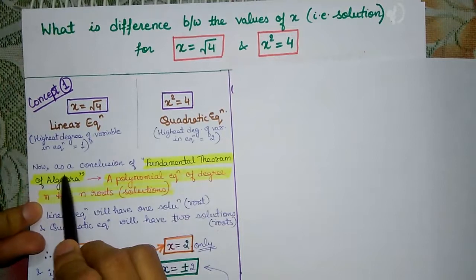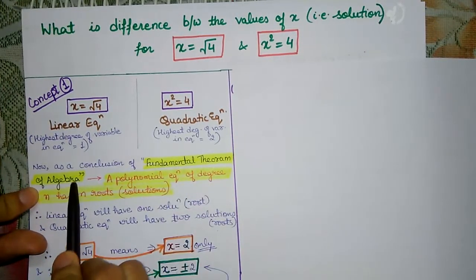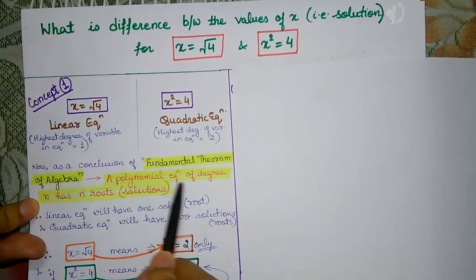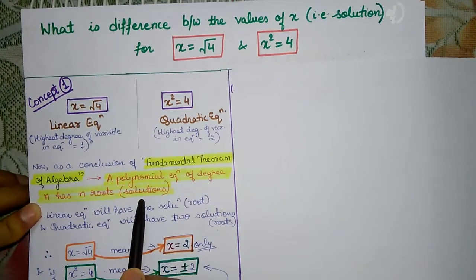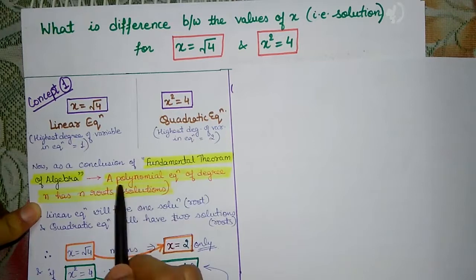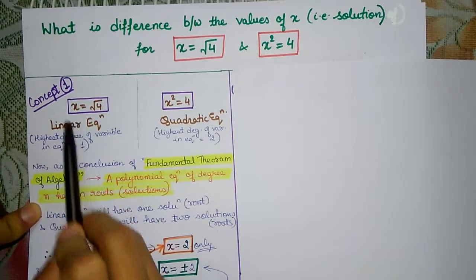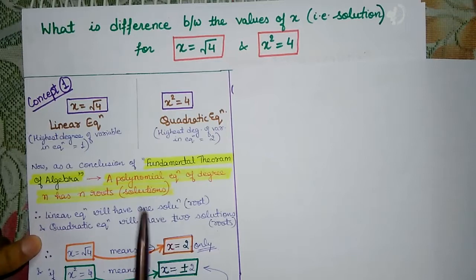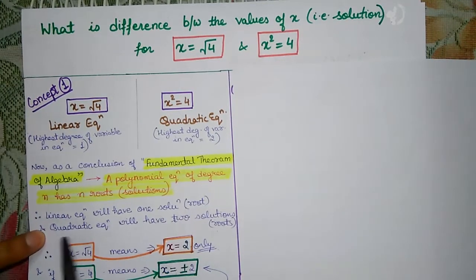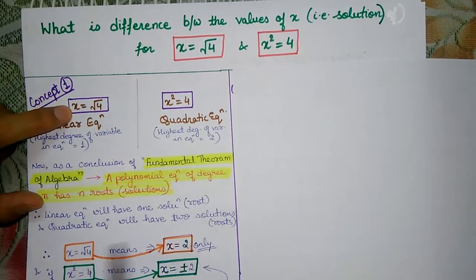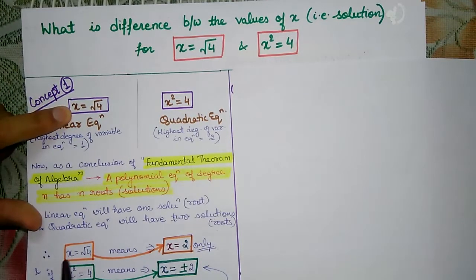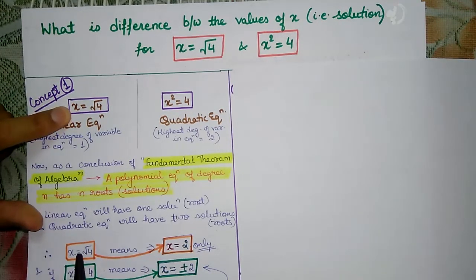As a conclusion of the Fundamental Theorem of Algebra, x is equal to root 4 is a linear equation. Therefore, a linear equation should have just one root, and a quadratic equation will have two roots. So when you solve x is equal to root 4, because this is a linear equation, only one solution is possible.